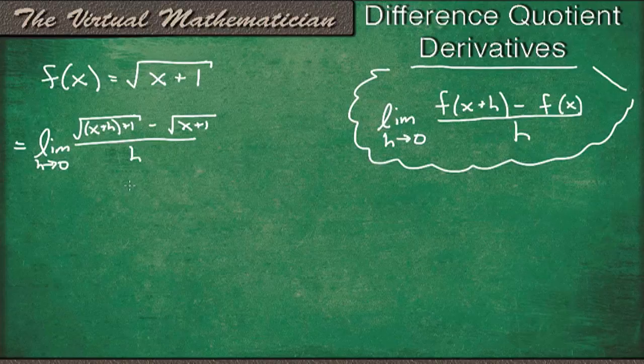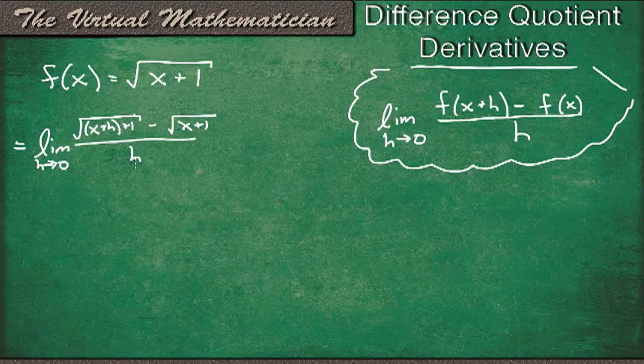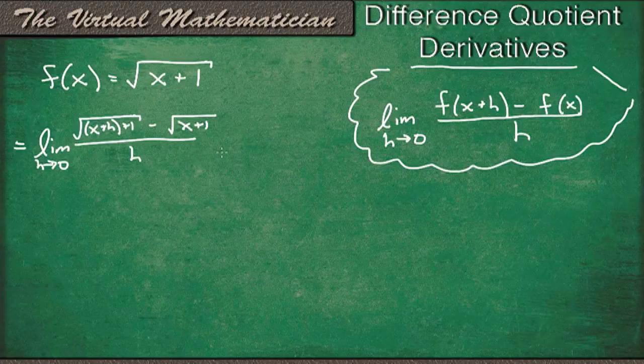Now we can't evaluate the limit straight away, because since we have h in the denominator, we'll have a 0 there, and we're not allowed to divide by 0. So I think the first best step for this problem would be to multiply by the conjugate, so we can get rid of these radicals in the numerator.